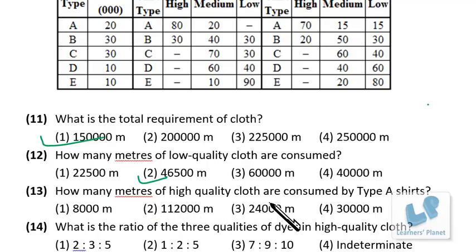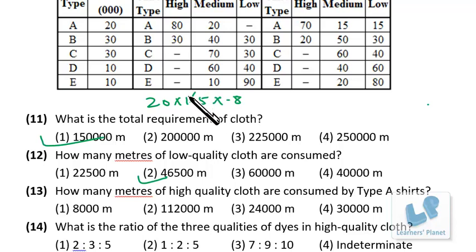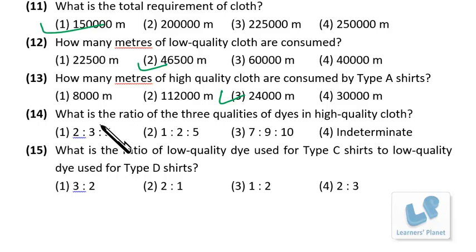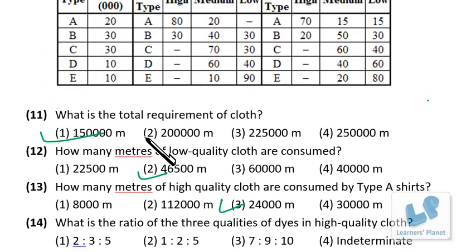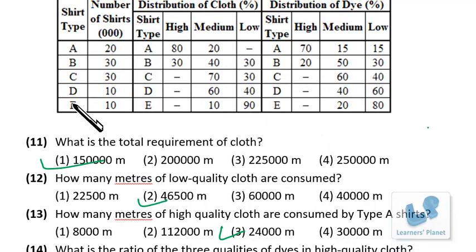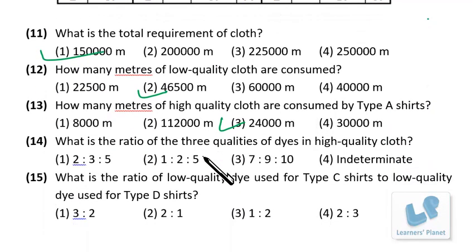For high quality cloth consumed by Type A shirts: 20,000 shirts × 1.5m × 80% = 24,000 meters. The next question asks for the ratio of three dye qualities in high quality clothes, but since there are five shirt types we cannot determine which shirt type is being referenced, so that question cannot be answered.